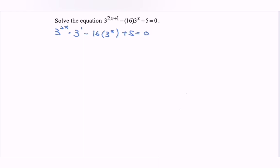We have common terms, which is 3 to the power of x. So we rewrite the equation: 3 times (3 to the power of x) squared minus 16 times (3 to the power of x) plus 5 equals 0.